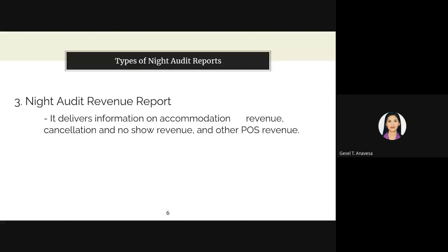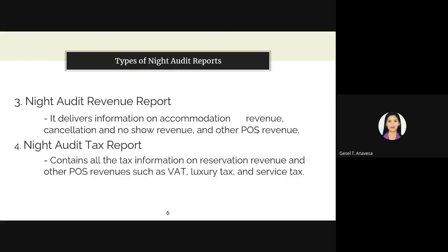The third type is the night audit revenue report, which delivers information on accommodation revenue, cancellation and no-show revenue, and other POS revenue. Revenue generated through various agencies such as travel agents, corporate organizations, internet bookings, and others is also listed in this report. The fourth is the night audit tax report, which contains all tax information and reservation revenue, and other POS revenue such as VAT, luxury tax, and other service taxes.